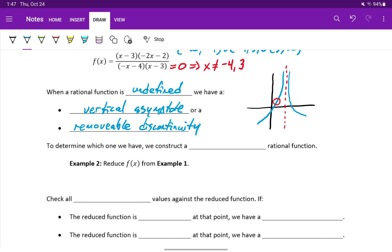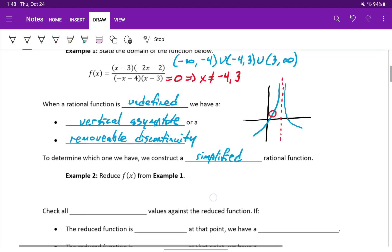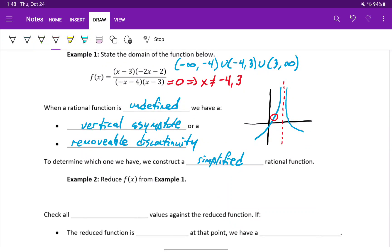In order to determine what we have at each restricted value, we need to construct a simplified rational function. What that means is, we just want to reduce the given expression. If it's not already in factored form, we need to factor it, and then look for any factors that would cancel.